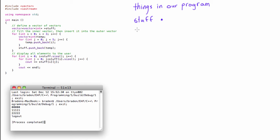The next thing is when we enter the for loop, we create an integer called `i` and initialize it to zero. Inside this first for loop we also define another vector of type integer called `temp`. Again, this vector has no size — it's just a point that the computer is aware of, ready to accept integers. Then we enter the nested for loop and define another integer `j`, initialized to zero.